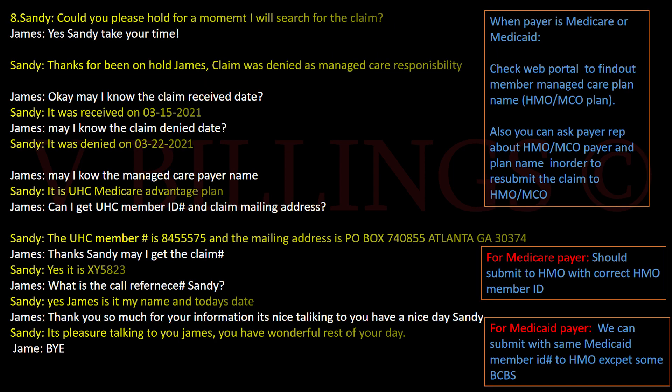Could you please hold for a moment, I will search for the claim. Yes, Sandy, take your time. Thanks for being on hold, James. The claim was denied as managed care responsibility. May I know the claim received date? The claim was received on March 15, 2021. And the denial date? The claim was denied on March 22, 2021. May I know the managed care plan name? It is UnitedHealthcare Medicare Advantage Plan. Can I get the UHC member ID? The UHC member ID number is 84555575.